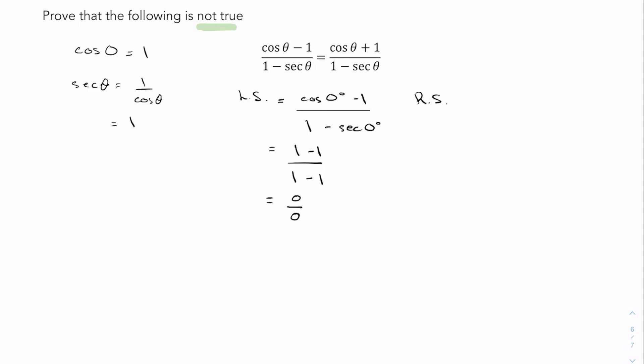Now the right hand side is equal to cos of 0 degrees plus 1 over 1 minus secant of 0 degrees. That's the same as 1 plus 1 over 1 minus 1, which is equal to 2 over 0. As you can see, the left side is not equal to the right side.